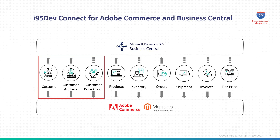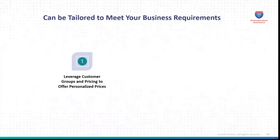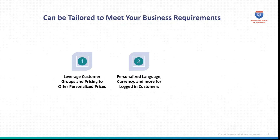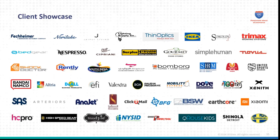Excited about what you see? i95 DevConnect can handle more complex use cases like using pricing rules and customer groups in ERP to offer personalized prices in e-commerce, personalizing language and currency for logged-in customers, controlling product and catalog visibility by customers, and managing both B2B and B2C customers from one e-commerce platform. i95 DevConnect adapts seamlessly to meet diverse business needs, and this is not limited only to new customers — it can also sync existing customers between Adobe Commerce and Business Central ERP systems, enabling seamless e-commerce adoption.